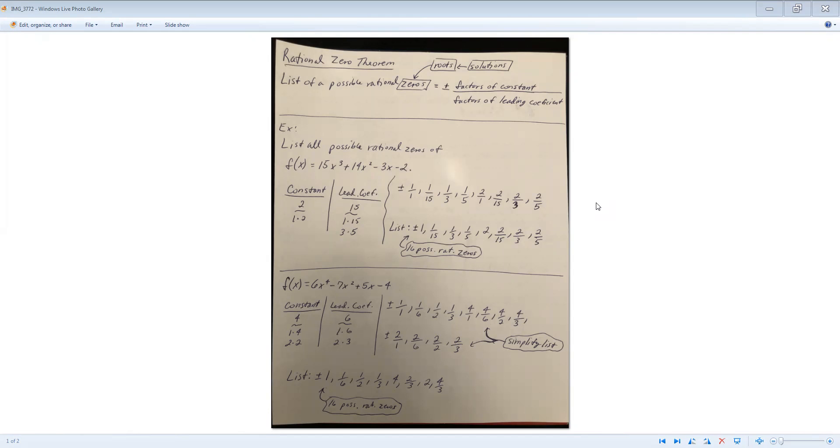The reason why they're called zeros, it goes back to our remainder theorem, it goes back to our factor theorem. When I plug these values, solutions, these roots into our function, the result will be zero. Or in other words, when I do my synthetic division or any type of division, my remainder will be zero.